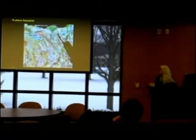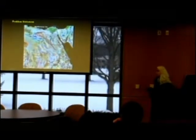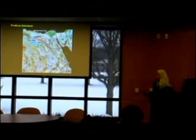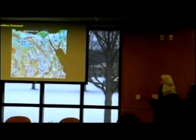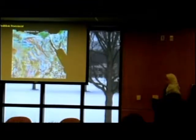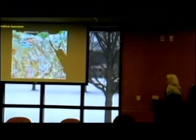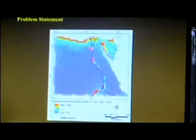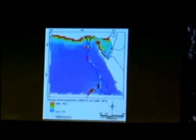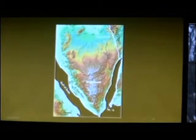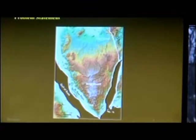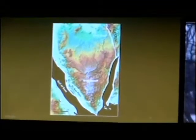Most arid countries suffer from the main problem of finding water resources, and my country, Egypt, suffers from the same problem. Egypt is considered one of the most arid countries because of its low annual average precipitation, and about 90% of its land is desert. So it is very important to find other areas with more water resources. My study area is located in southern Sinai, which receives annual precipitation of more than 60 millimeters per year, and in some rain events, even about 300 millimeters per year.